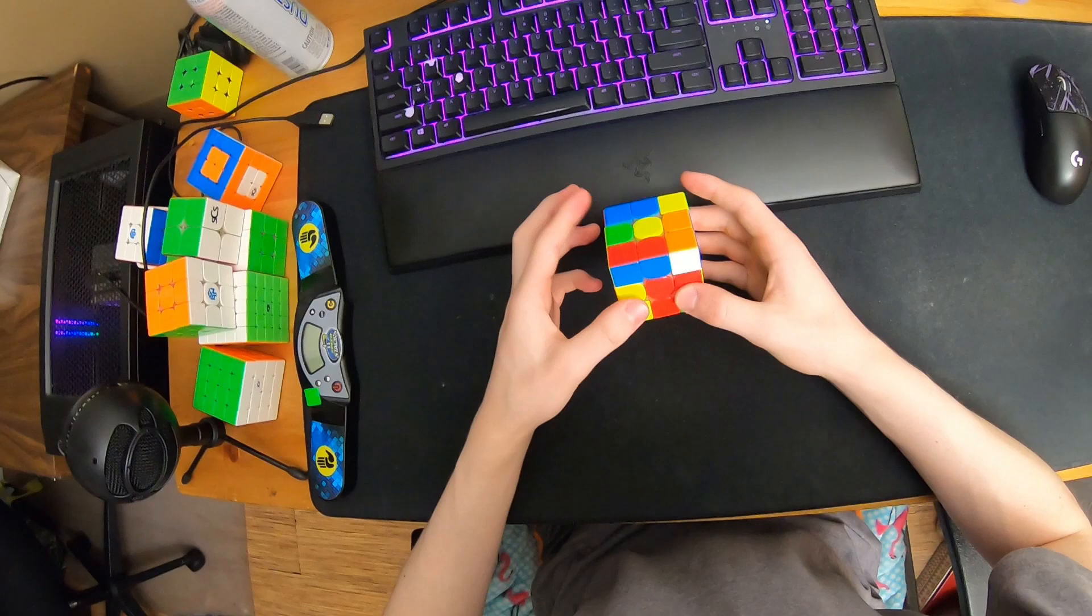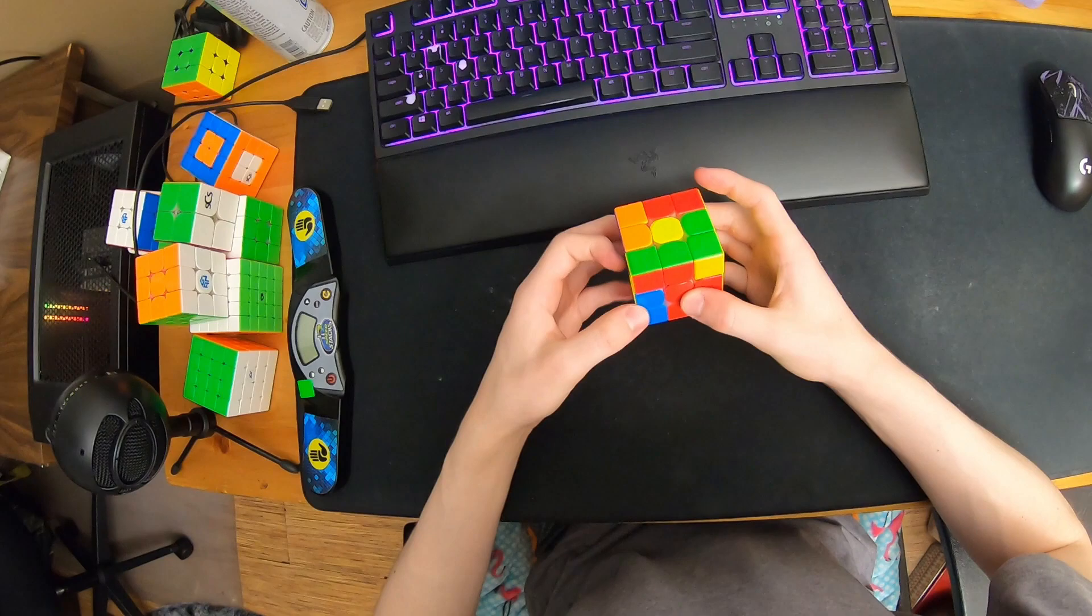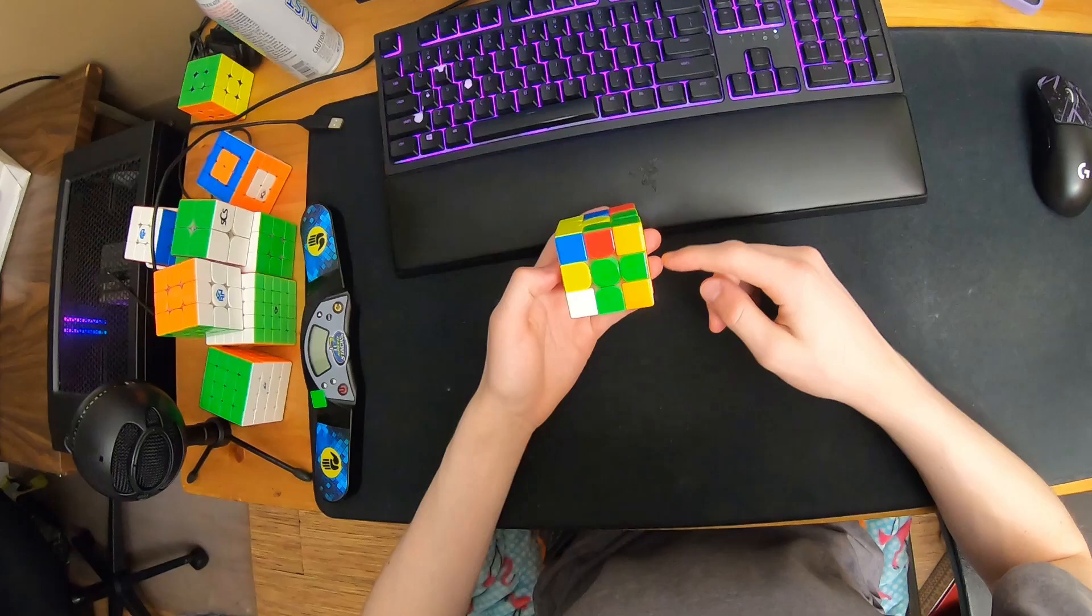Three moves R prime D prime R, and then I have this pair and this pair. When I insert this into the back it'll set this up. Then I inspect it to here—this edge stayed in place.